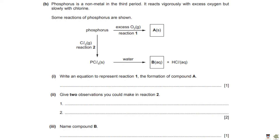Phosphorus is a non-metal in the third period; it reacts vigorously with excess oxygen but slowly with chlorine. Write an equation for reaction one — the formation of the phosphorus oxide. Phosphorus reacts as P₄. The equation is: P₄ + 5O₂ → P₄O₁₀, balanced with 5 in front of O₂.